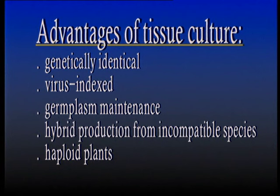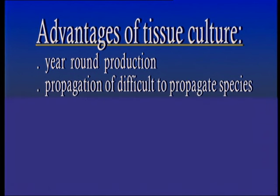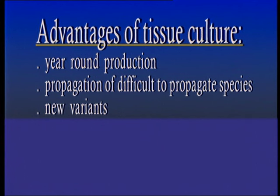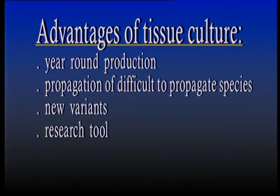Haploid plants may be obtained through anther culture. We can produce plants all year round using tissue culture techniques. Vegetative propagation of difficult-to-propagate species may be achieved by tissue culture. Production of new variants may also be achieved using mutagenic compounds or radiation. Finally, it is an important tool of research in many areas of plant sciences.